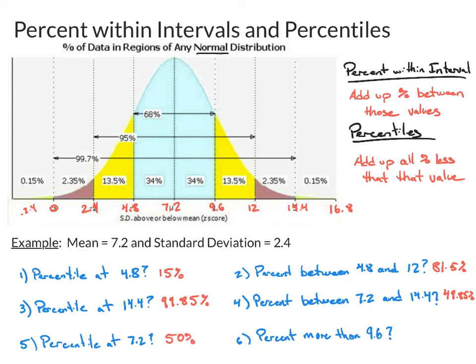And finally, the percent more than 9.6. As far as an interval is concerned, we're just saying everything more than 9.6. Well, you would add up all of these then. So if you add up all those percents, that is going to be 15%.